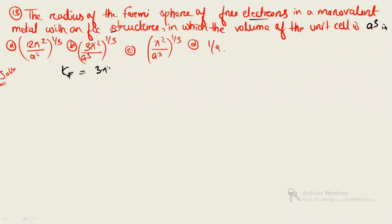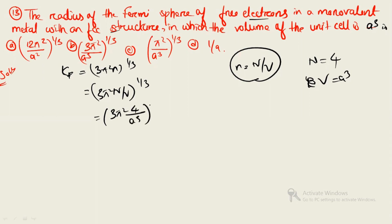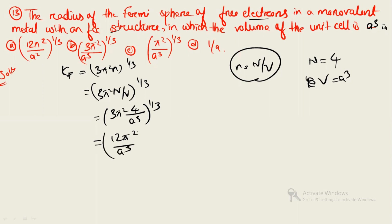The Fermi wave vector k_F equals (3π²n)^(1/3), where small n equals capital N divided by V. For an FCC lattice, the number of effective atoms per unit cell is 4, and the volume is a³. Substituting: k_F equals (3π² × 4 / a³)^(1/3) equals (12π² / a³)^(1/3). The correct option is option A.